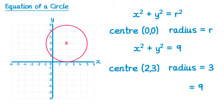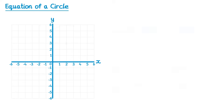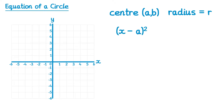This circle would have equation (x minus 2) all squared plus (y minus 3) all squared equals nine. Notice the x coordinate of the center was two and then we did x minus two, and the y coordinate of the center was three and we did y minus three. More generally, if the center is (a, b) and the radius is r, the equation will be (x minus a) all squared plus (y minus b) all squared equals r squared.